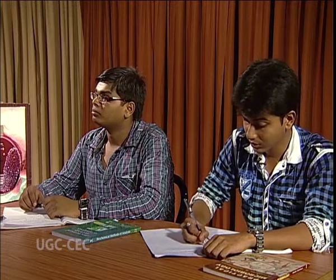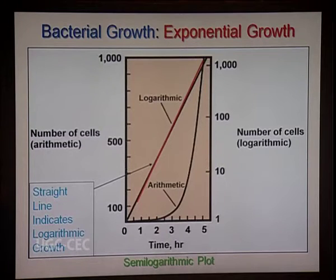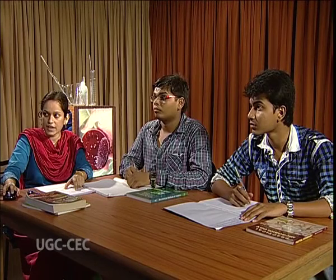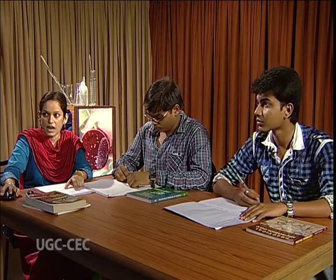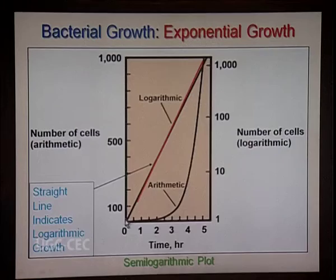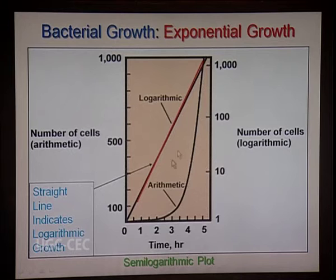To study the bacterial growth curve, we plot the data on a graph through two means: an arithmetic plot and a logarithmic plot. In the arithmetic plot, time is on the x-axis and number of cells on the y-axis, giving a constantly curving slope that does not help us enumerate cells at a particular time. Therefore, we go for a logarithmic plot, in which cell numbers are plotted on a logarithmic base with time on the x-axis. This exponential growth plot helps us determine cell numbers and calculate generation time.